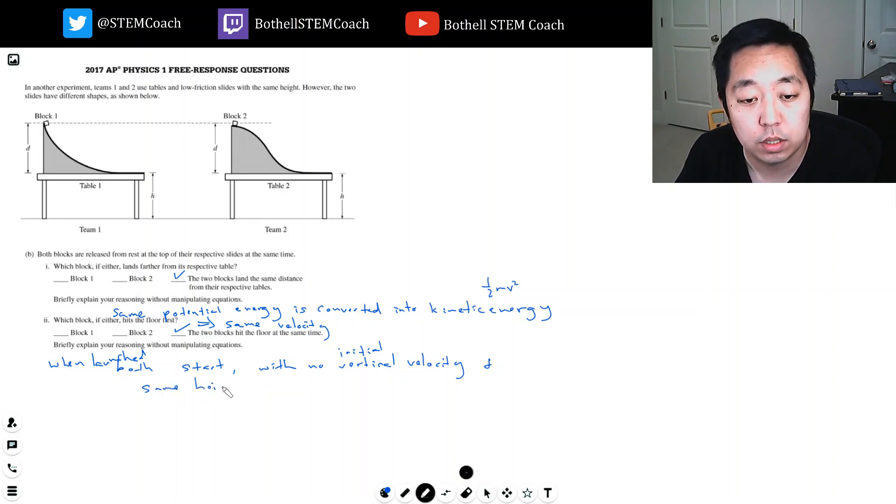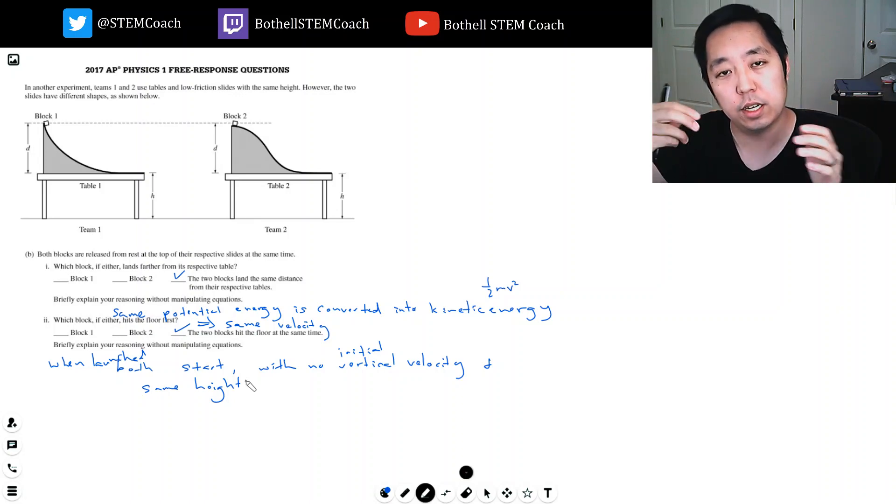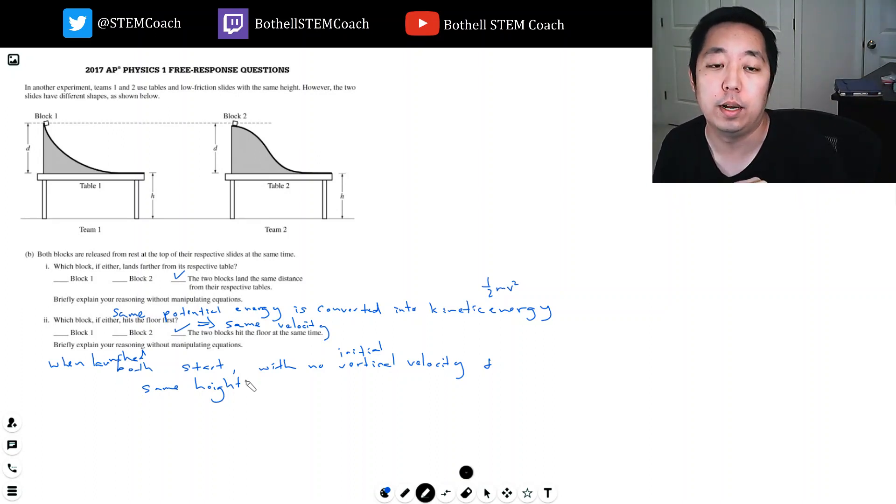And they start at the same height. So the only thing that governs how long it stays in the air is the effect of gravity causing it to fall to the ground. Since they both start with no vertical velocity when they're launched, then they'll fall at the same rate.